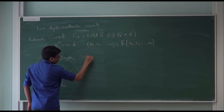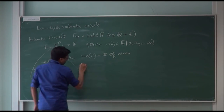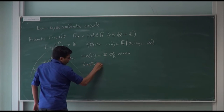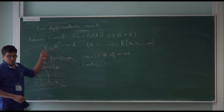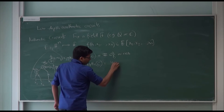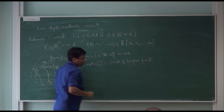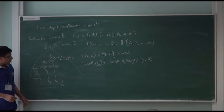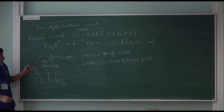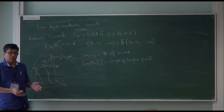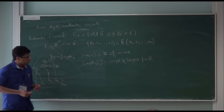Via a sequence of operations like this, you form a directed acyclic graph, and at the end you have one output node which computes a polynomial function over the inputs. There are two natural complexity measures: the size of such a circuit is the number of wires, and the depth, just like in Boolean complexity, is the length of a longest path from an input to the output node. Roughly, the size corresponds to the amount of work done in the computation, and the depth corresponds to how much parallelism there is — low depth circuits correspond to highly parallel computation.